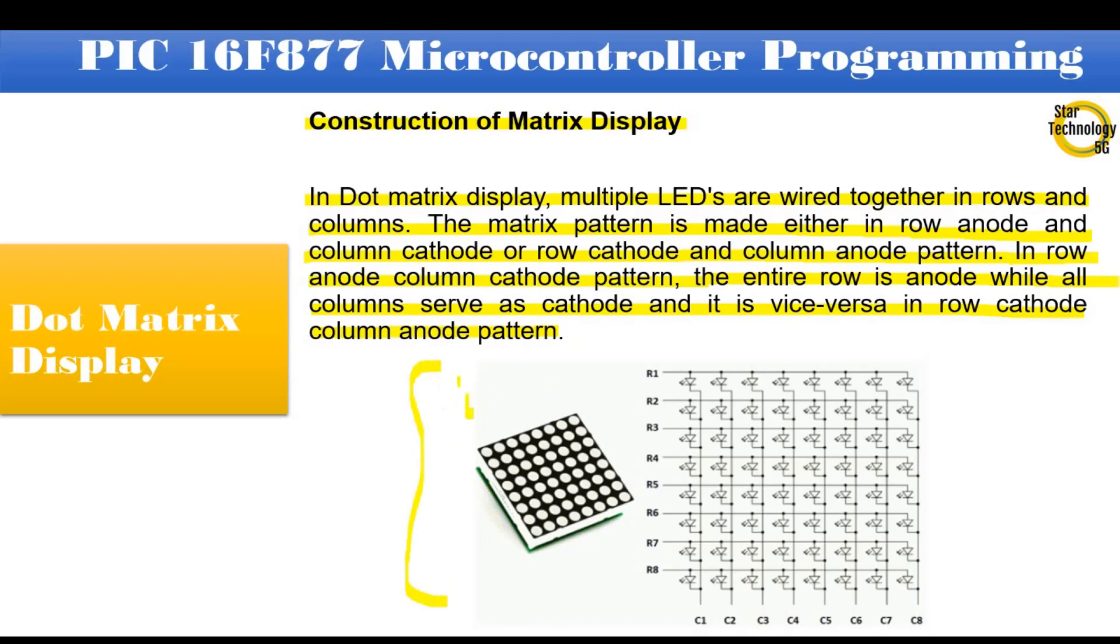As shown in figure, it is an 8x8 dot matrix display. All anodes are connected with row 1. In second row all anodes are connected with row number 2, and so on. All cathodes are connected with column 1. In second column all cathodes are connected with column number 2, and so on.